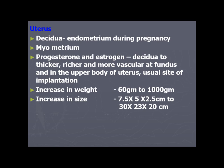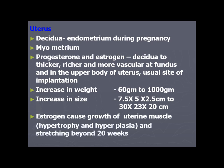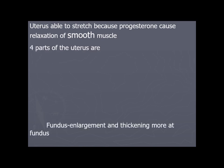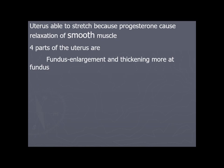Estrogen causes growth of uterine muscles through hypertrophy, hyperplasia, and some stretching. Beyond 20 weeks, the uterus is able to stretch because progesterone causes smooth muscle relaxation. There are four parts of the uterus: the fundus (uppermost area), body, lower uterine segment, and the cervix.